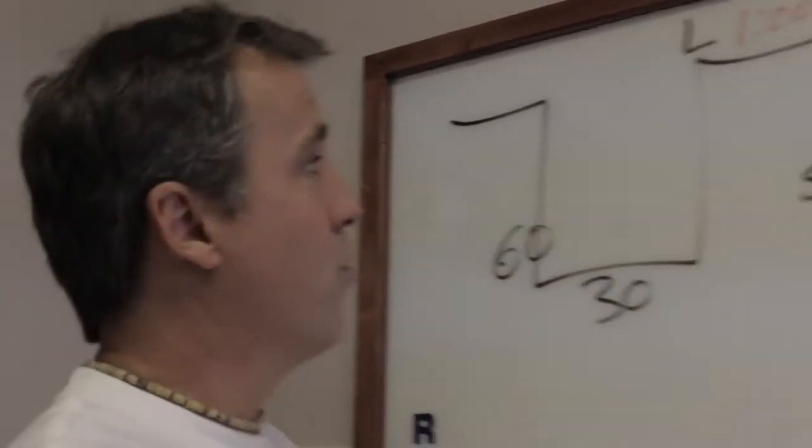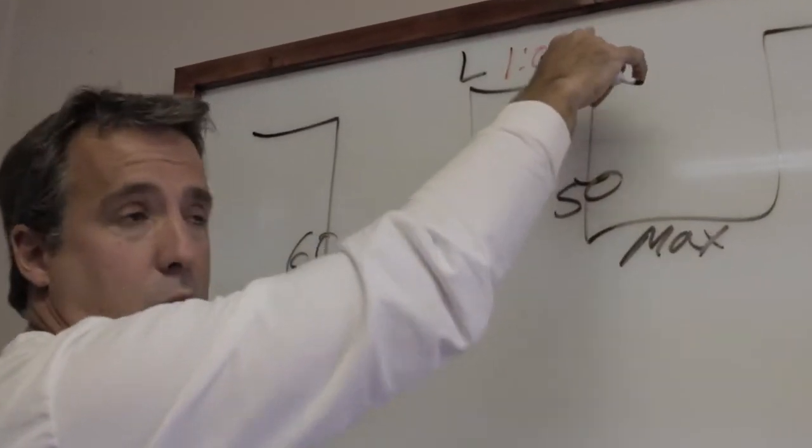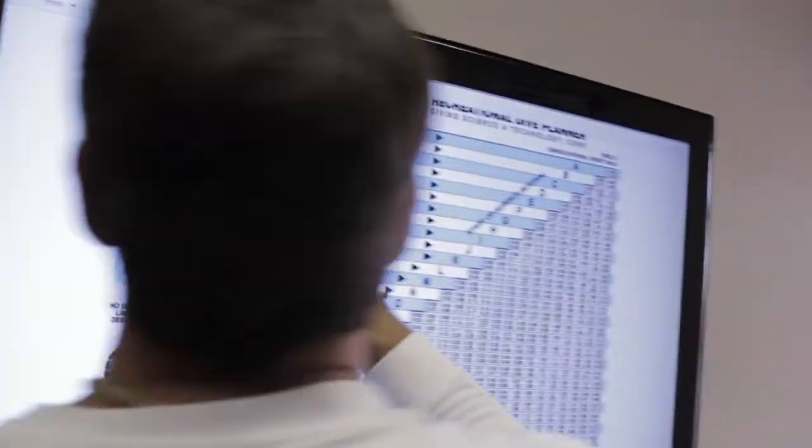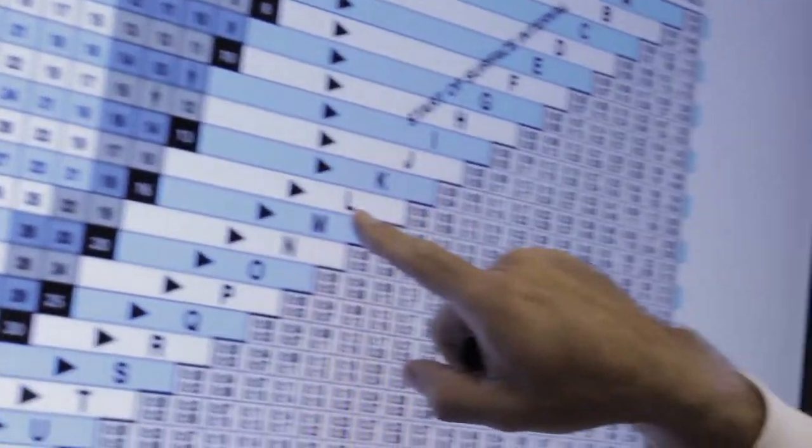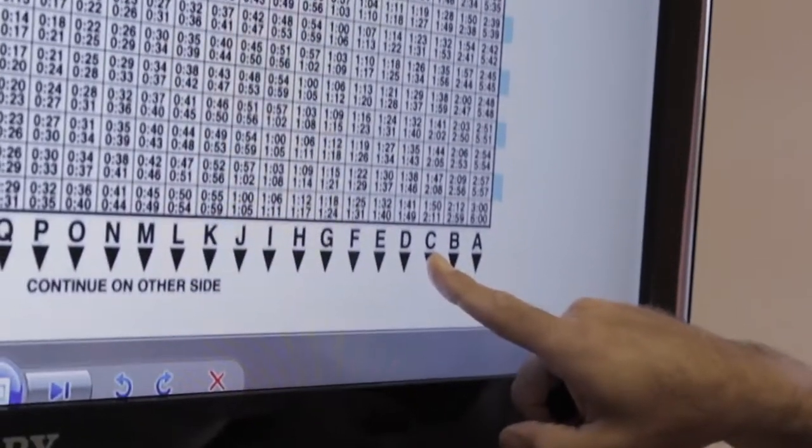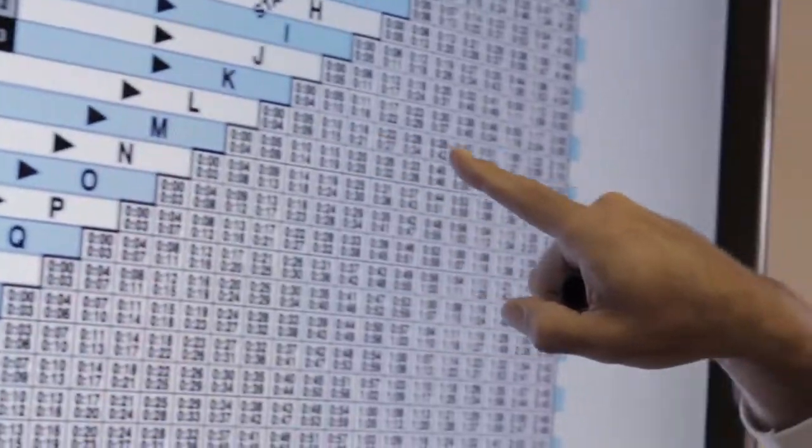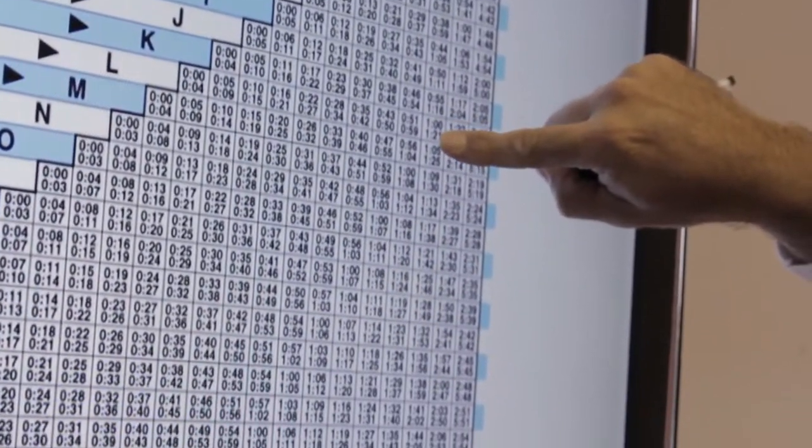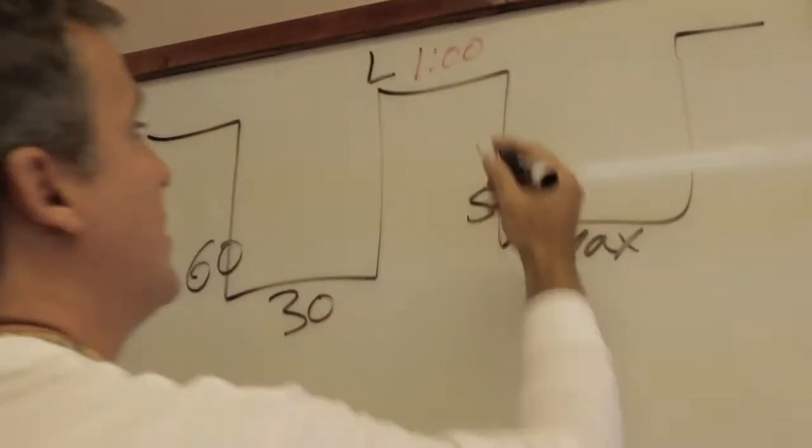We stay out of the water for one hour which will give us another pressure group. Pressure group L stays out of the water for one hour - within the range of one hour to one hour and 21 minutes - and is now at pressure group C. I'm going to write down C.